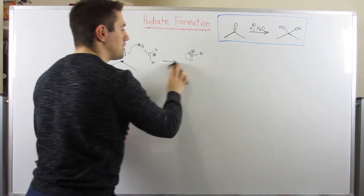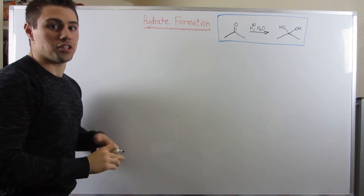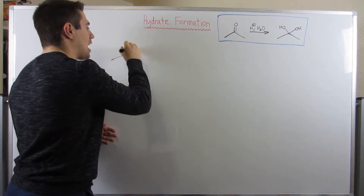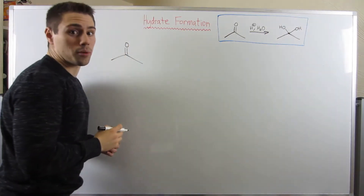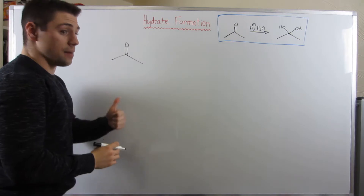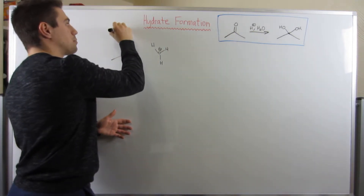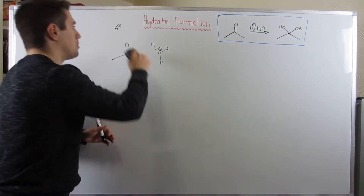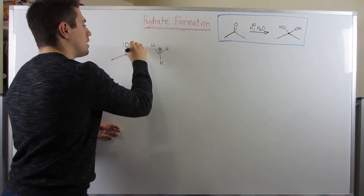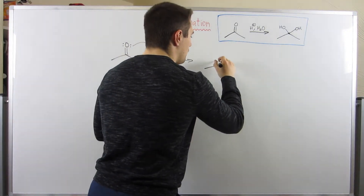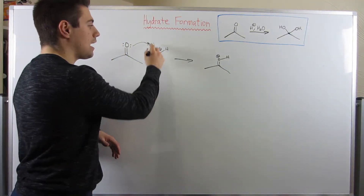So just know that protonating the carbonyl is a very important step, and you will do it in the first step of pretty much every mechanism we draw this unit. So let's talk about hydrate formation. A hydrate is two alcohols on the same carbon. So if we take our carbonyl, the very first step is to protonate it. Let's draw hydronium. If your teacher is okay with having you just draw floating H pluses, go ahead and draw those as your source of protons. But to be explicit, I'm going to draw hydronium. So let's protonate our carbonyl oxygen. That means we have our protonated carbonyl, which makes our carbonyl carbon more reactive, more susceptible to nucleophilic attack. And we have water left over.